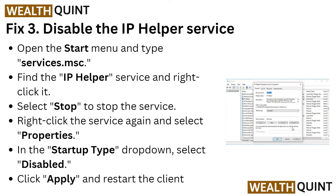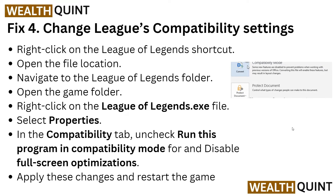If that does not resolve the problem, Fix 3 is to disable the IP Helper service. Open the Start menu, type services.msc, then find the IP Helper service. Right-click on it and select Stop to stop the service. Right-click again, go to Properties, set the Startup Type dropdown to Disabled, click Apply, and restart the client.